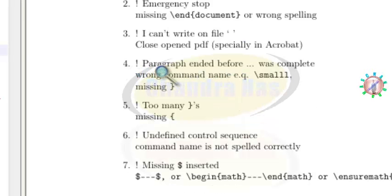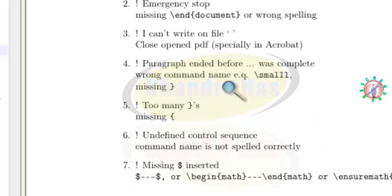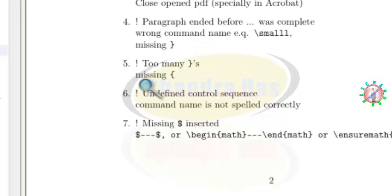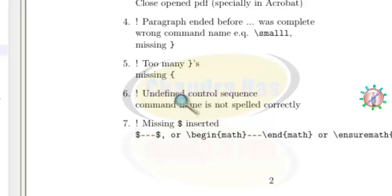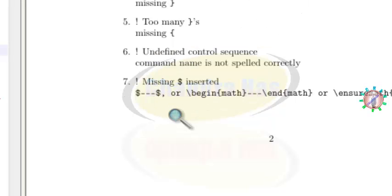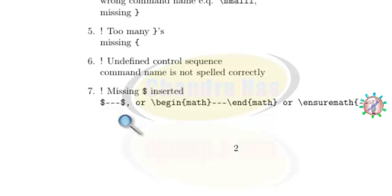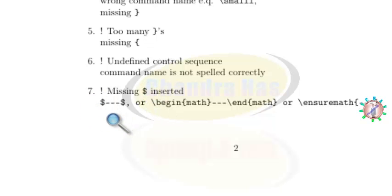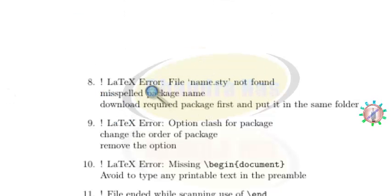If the error 'paragraph ended before some command was complete' appears in the log, you are using an undefined or wrong command name. Similarly, 'missing dollar inserted' means you have used a wrong or undefined command name — make sure you are using a defined command.